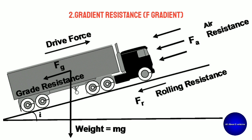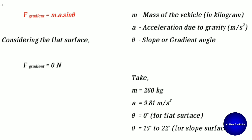Next: gradient resistance. This is the climbing ability of the vehicle. When a vehicle runs on a gradient or slope, gravity drags it downward. The formula is F_gradient = m × g × sin(θ), where θ is the slope angle. For a flat surface, θ = 0°, giving a gradient resistance force of 0 Newton.